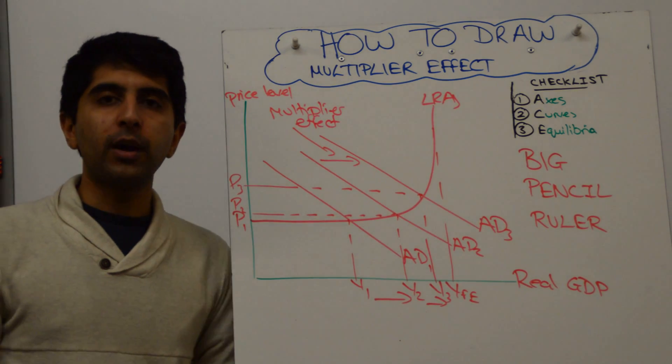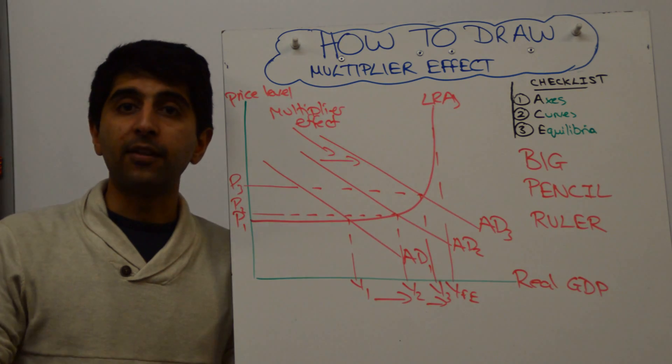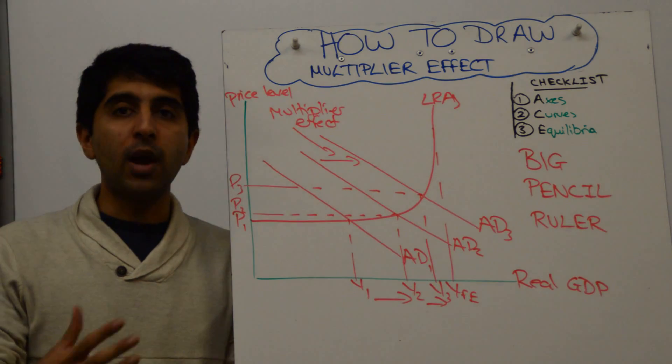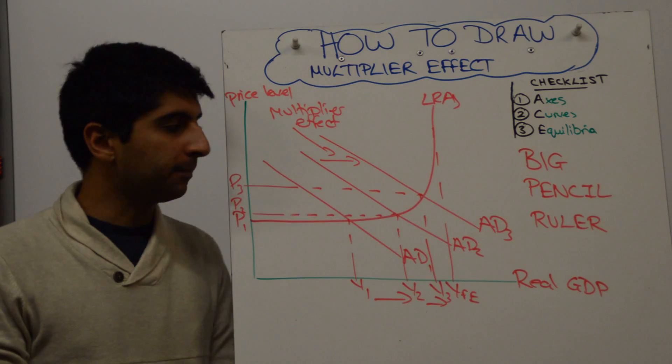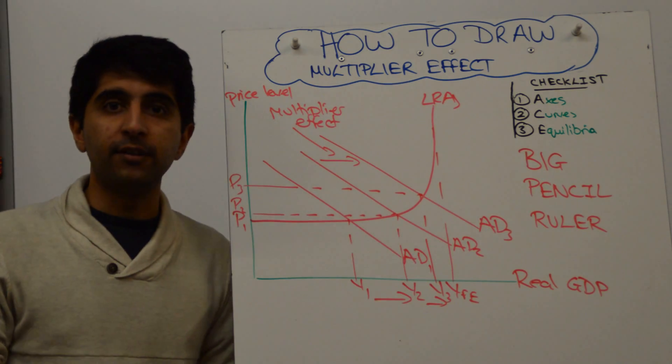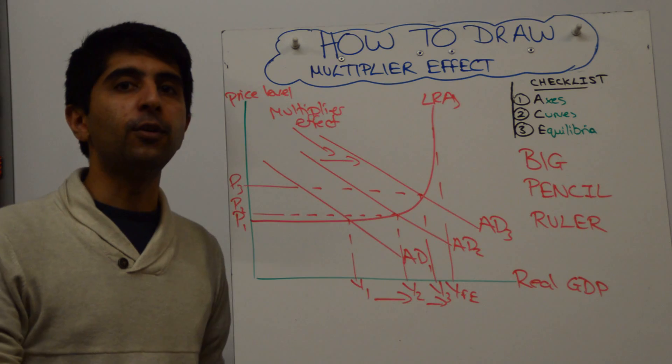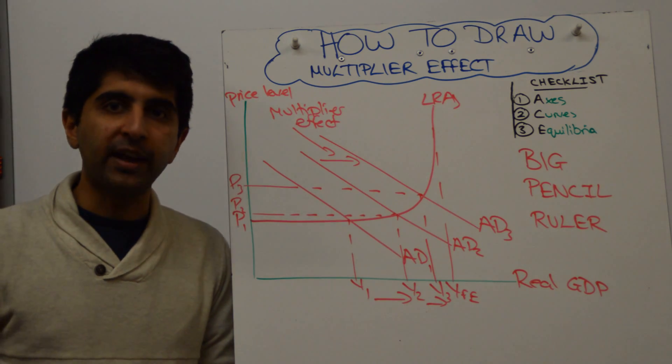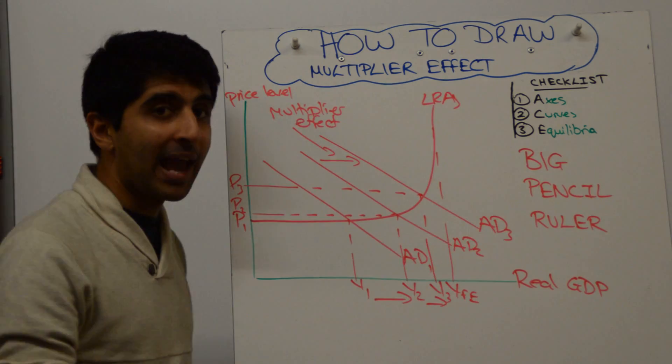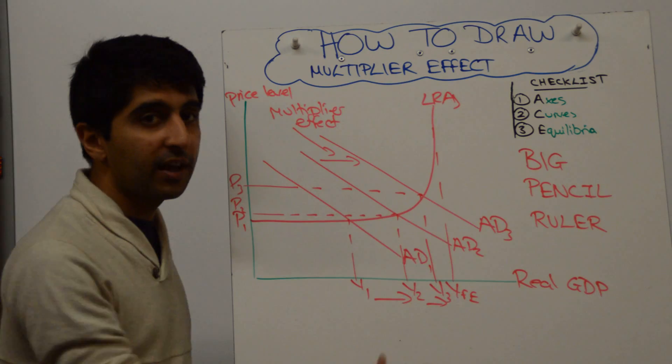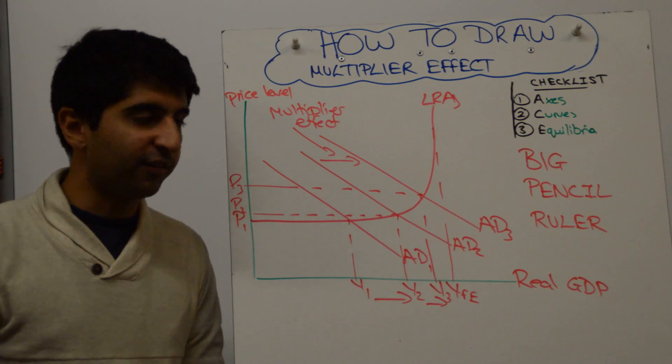So maybe your question is saying that there is an increase in government spending and you have to show the multiplier effect of that increase in government spending. You would say, well, the initial increase in spending, so the government spending increases AD from AD1 to AD2. But because of the multiplier effect, AD settles actually at AD3. So that second shift is as a result of the multiplier effect.